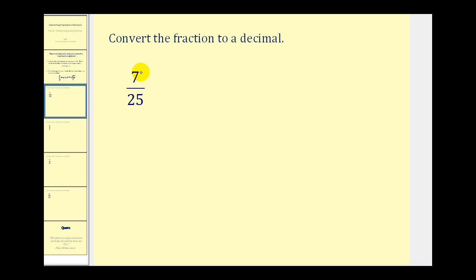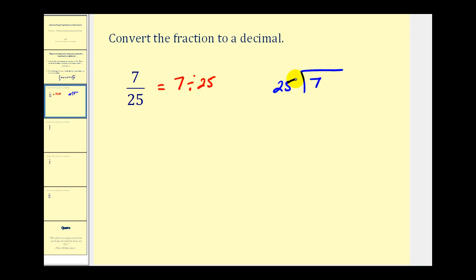Remember that a fraction bar is just a division symbol. So if we have a over b, that's the same as a divided by b, and we can set it up in that form to perform long division. So here we have seven twenty-fifths, which means seven divided by twenty-five. To perform long division we'll set it up as seven divided by twenty-five. There aren't any twenty-fives in seven, so we put a decimal point here, move it straight up into our quotient, and then we can start adding zeros. Now we can ask how many twenty-fives are there in seventy.